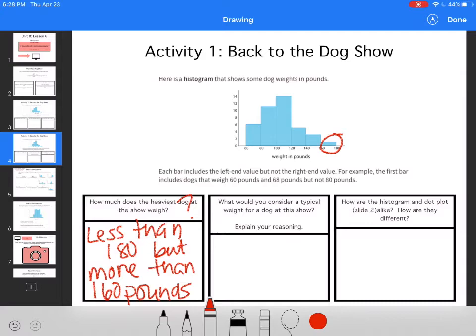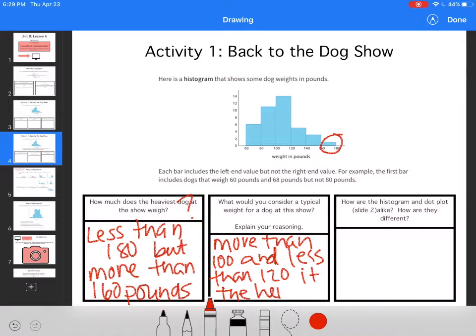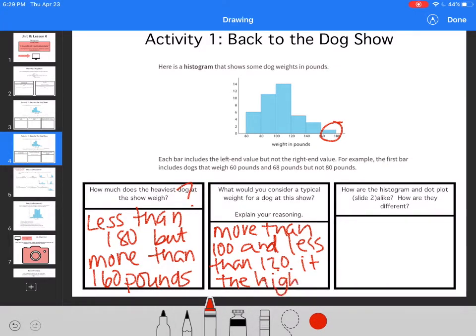What would you consider the typical weight for a dog at this show? Explain your reasoning. If I'm looking at it, the majority of dogs weigh between 100 and 120 pounds. So I would say more than 100 and less than 120, because it is the highest bar.